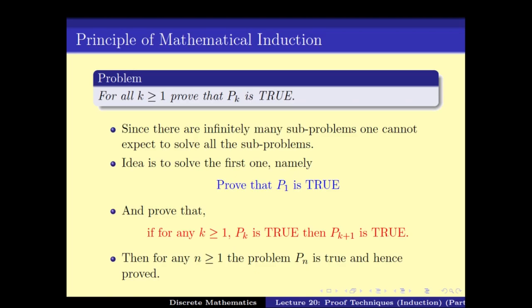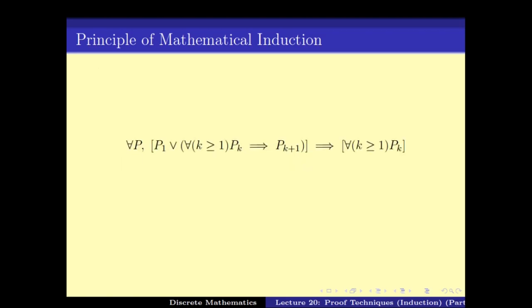Why does this work? P1 is true, so P1 implies P2 is true. P2 implies P3 is true. P3 implies P4 is true, and so on and so forth. This is given by the principle of mathematical induction, which states that proving 'for all k, Pk' is basically the same as first proving P1, and then for all k proving that Pk implies Pk+1.